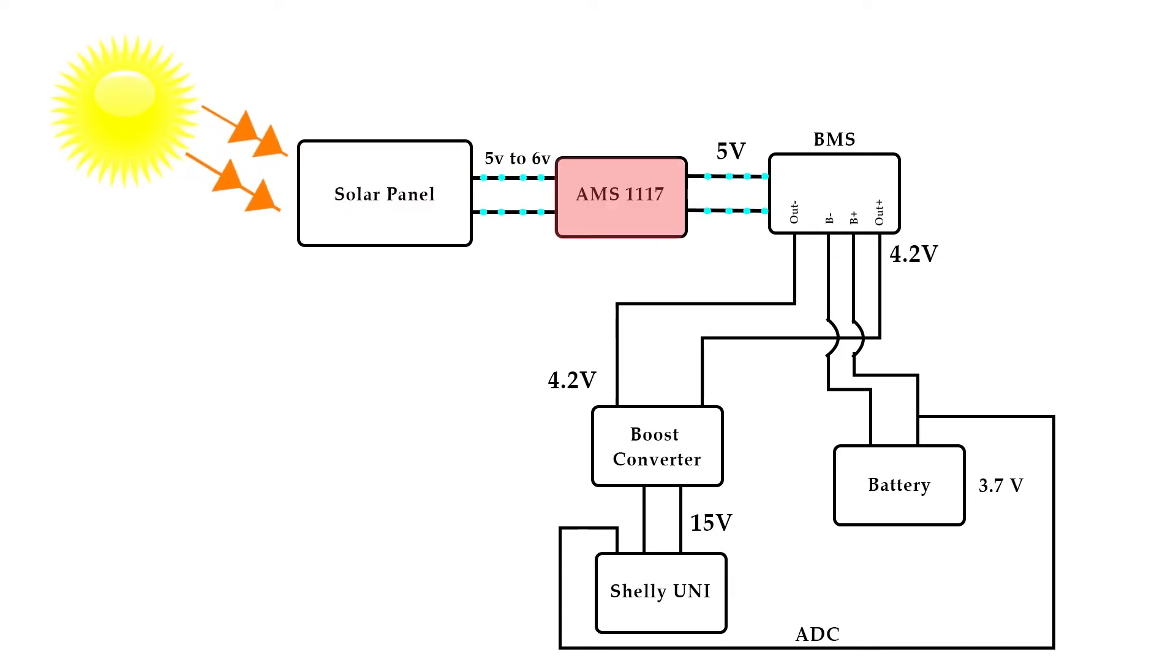The AMS 1117 Buck Converter regulates this voltage to less than 5V and transfers it to the TP4056 Battery Module, which uses this voltage to charge the 3.7V 18650 battery.